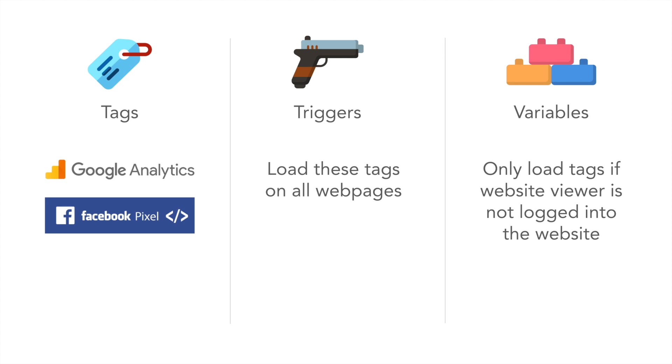It allows you to have clearer data. This is really one of the most powerful functions of Google Tag Manager — the ability to easily set and manipulate these variables to control everything.